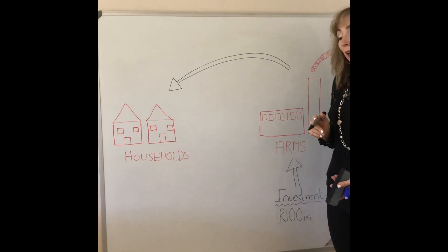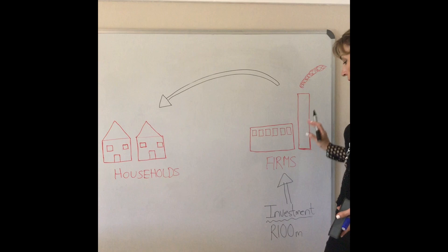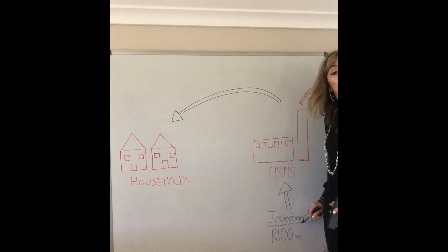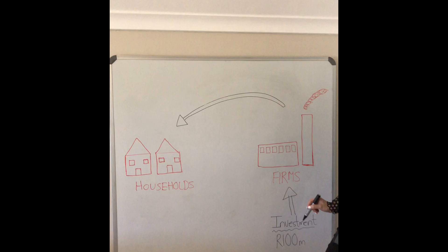We're now going to take a look at how the multiplier works. So we're going to look at the circular flow and see how the multiplier effect works here. Let's say we have an increase in autonomous investment of say a hundred million rand. How does this affect our little economy?